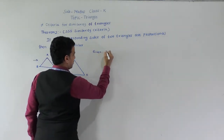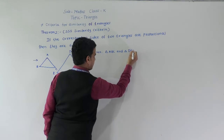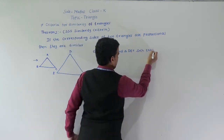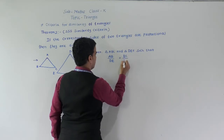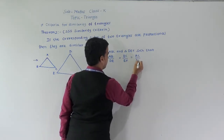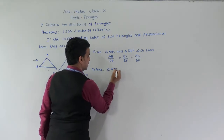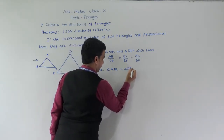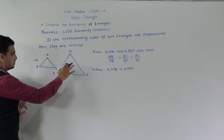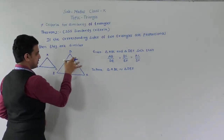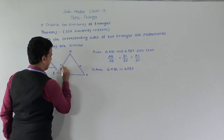Given: triangle ABC and DEF such that AB by DE is equal to BC by EF is equal to AC by DF. We have to prove that triangle ABC is similar to triangle DEF. For construction, we take points P and Q on DE and DF such that AB is equal to DP and AC is equal to DQ, and then we join PQ.